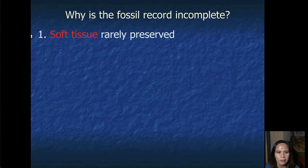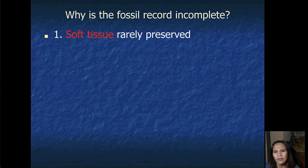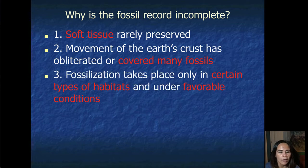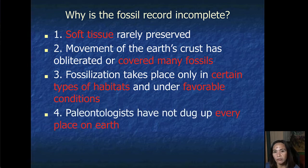Why is the fossil record incomplete? Well, soft tissues are very delicate and therefore it's rarely preserved. Movements of the Earth's crust have obliterated many fossils or have covered many fossils. Fossilization takes place only in certain types of habitats and under favorable conditions, which is why the fossil records are incomplete. Number four, paleontologists have not dug up every place on Earth, obviously, which is why the fossil records are incomplete.